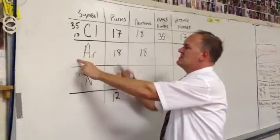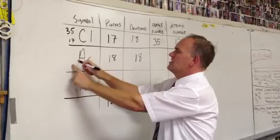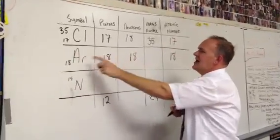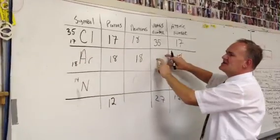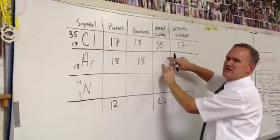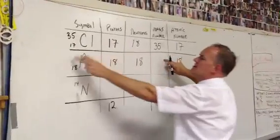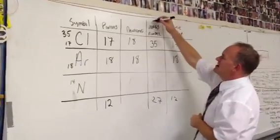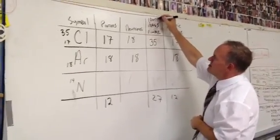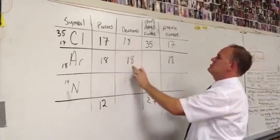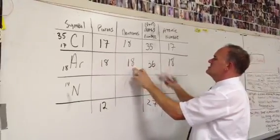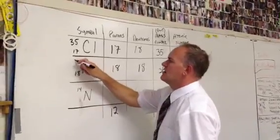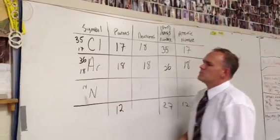We know the bottom number has to be the proton number, and the top number has to be the mass number. Whatever goes in the mass number spot comes from protons plus neutrons. So protons plus neutrons equals 36. We write 36 up there — done with that one.